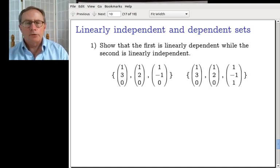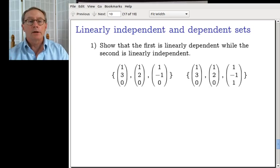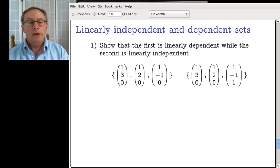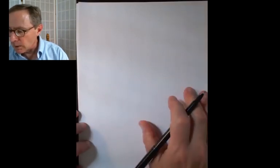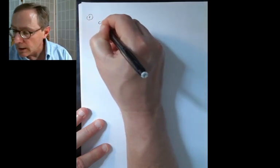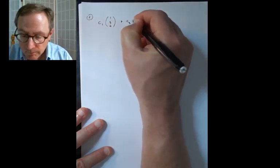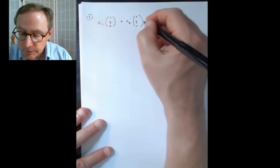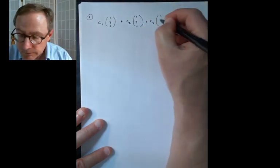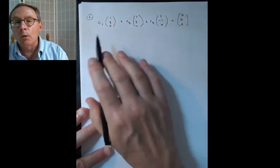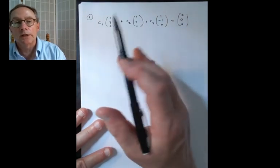A person might say: if you take the first one and double it — very true. If you happen to notice exactly what the dependence is, well, that's good, nobody made seeing the answer a crime. But I'm going to go through how you would solve this problem in general, because for those times when you're stuck, it doesn't do any good to have seen a couple of clever answers. I'm looking to show that the first set is linearly dependent, so I write c1 times (1,3,0) plus c2 times (1,2,0) plus c3 times (1,−1,0) equals (0,0,0), and I expect to find more than just the trivial solution.